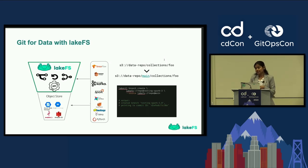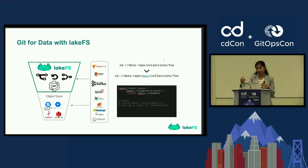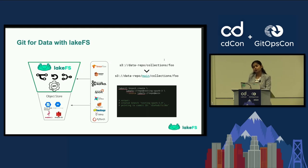Looking at it from the code side, with minimal intervention to your existing code you will have data versioning enabled. If you look at the S3 path — if you already have your data repository under a specific path — by having LakeFS sit between your applications and your object store, all you're doing is adding an extra prefix in your S3 path which is the name of the branch, and it helps you identify which branch a specific file belongs to.